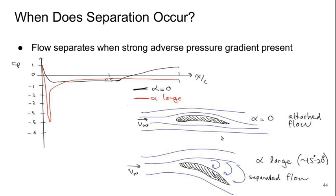So first we start by asking the question, when does flow separation occur? Basically, the flow separates when there's a strong adverse pressure gradient present, in other words, a strong sudden increase in pressure.